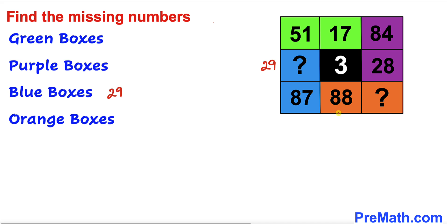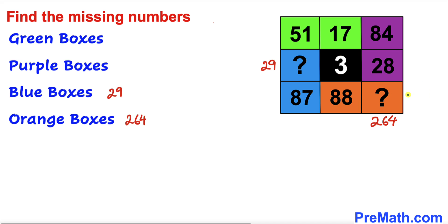Finally, let's focus on these orange boxes. We are going to apply the same strategy and multiply this 3 with the adjacent number. 3 times 88 is going to give us 264. So our missing number in this orange box turns out to be 264.